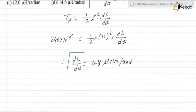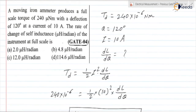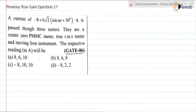If we simplify it for dL/dθ, we will be getting it as 4.8 micro henry per radian. This is the dL/dθ. Very simple — the only thing is we need to recall the formula. The correct option is option B. This is about previous year GATE question number 16.